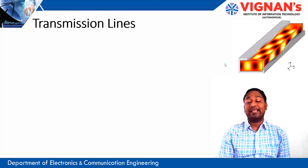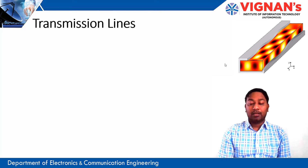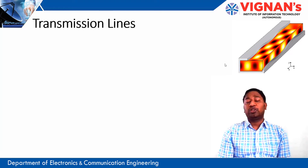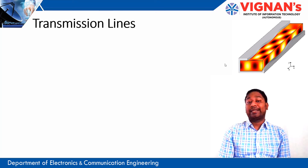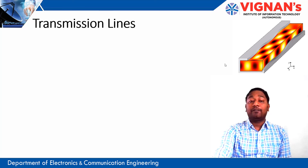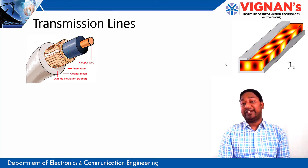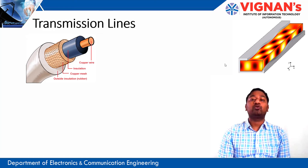A transmission line is a medium which can transfer power from one point to another. Basically it is a two-conductor system. Let us see what the different types of transmission lines are.